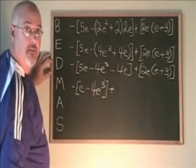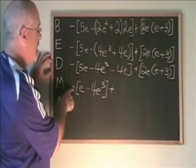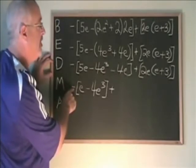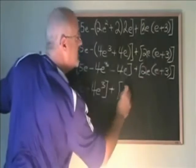This bracket can no longer be simplified, so I'm just going to be rewriting it, changing the signs because it has been multiplied by a negative 1. The second bracket has 2e times e inside.